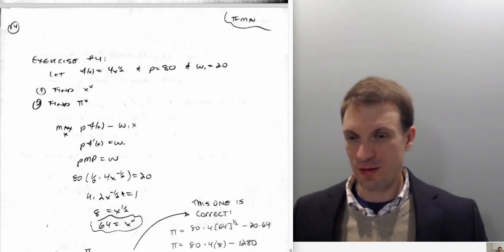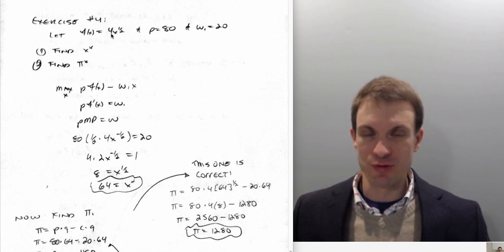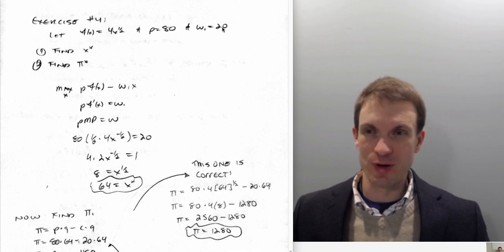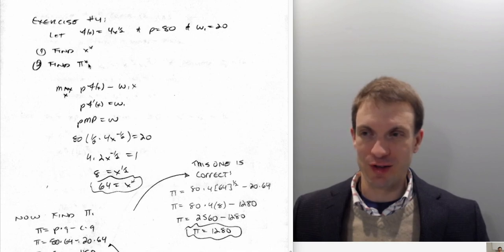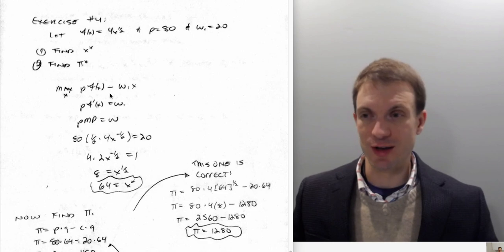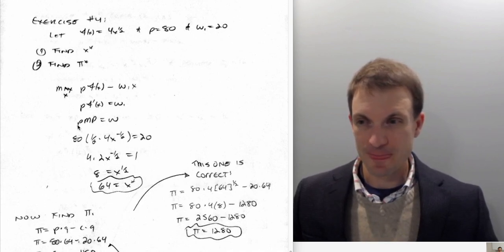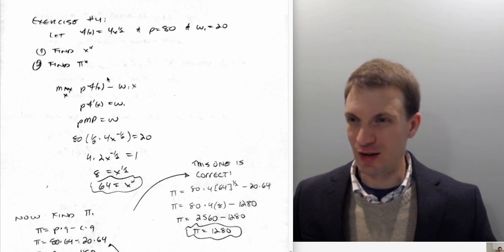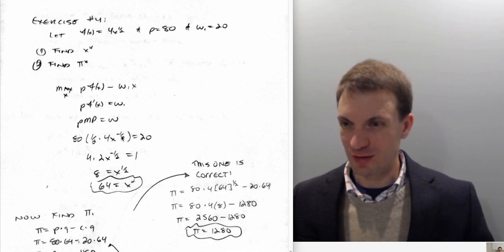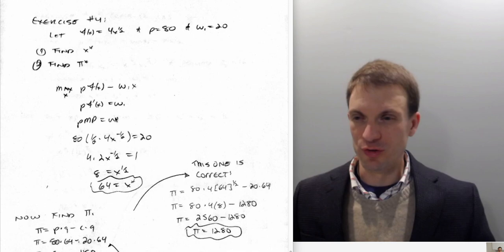The last exercise calls attention to a place where people might make a mistake. Suppose my production technology f(x) = 4 times x to the one-half, the output is sold for 80, and the input costs 20. Find the optimal level of x and the optimal profits. So in addition to finding the profit-maximizing use of input 1, we're also finding actual profits. The correct production function is just 4x to the one-half.